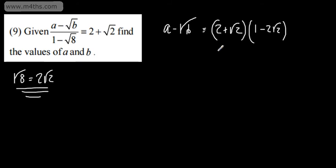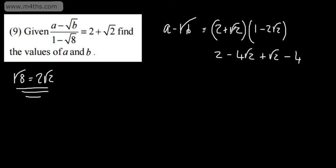If we expand this out, showing our workings, we're going to get 2 minus 4 root 2 plus root 2, and then root 2 times by 2 is 2, and then multiply by 2 which is 4, so that's going to be minus 4. The advantage of leaving that as root 8 is that you would have got the root of 16, and the root of 16 is 4. So combining these: 2 minus 4 is minus 2, and minus 4 root 2 plus 1 root 2 is going to give us minus 3 root 2.